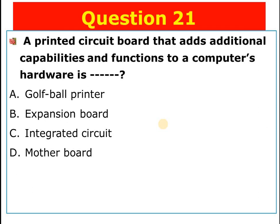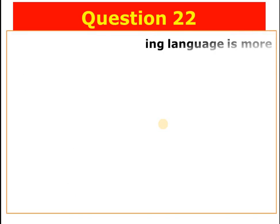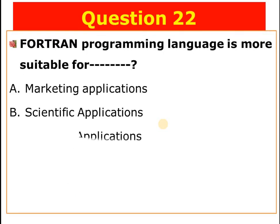Question number twenty-one: A printed circuit board that adds additional capabilities and functions to a computer's hardware is called blank. A) Golf ball printer, B) Expansion board, C) Integrated circuit, D) Motherboard. Choice B — expansion board — is the answer.